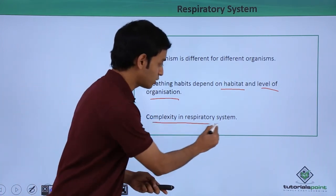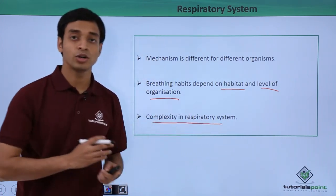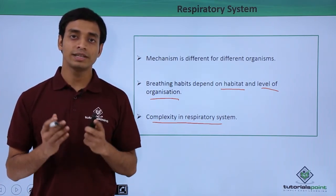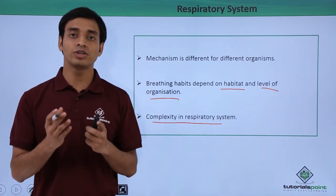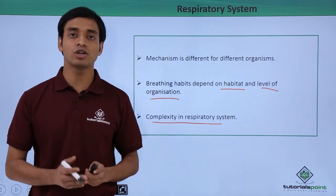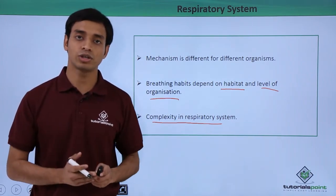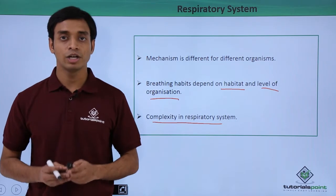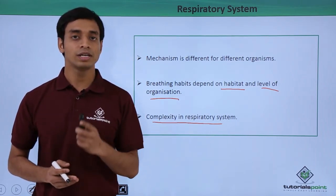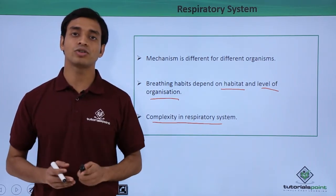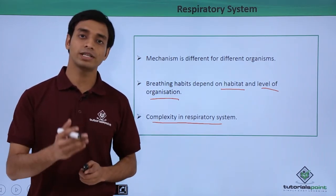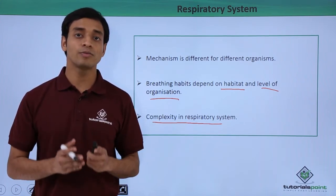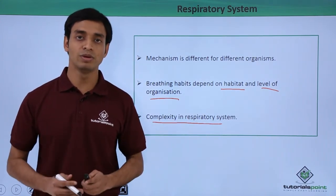Respiration is also dependent on the complexity of the respiratory system. For example, lower groups of organisms have a respiratory system dependent on the simple process of diffusion, which is in turn dependent on the concentration gradient. So gaseous exchange can happen simply based on the concentration gradient, or by the process of simple diffusion.